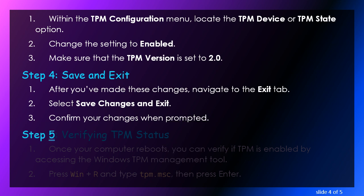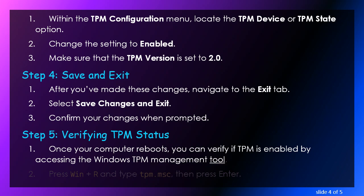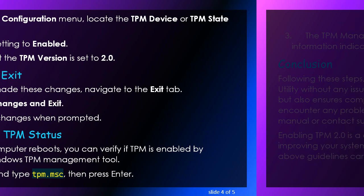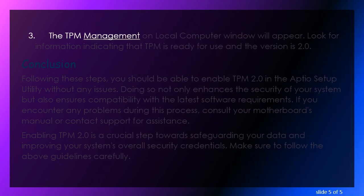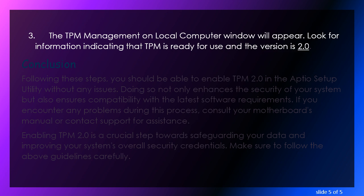Step 5: Verifying TPM Status. Once your computer reboots, you can verify if TPM is enabled by accessing the Windows TPM Management tool. Press Win + R and type tpm.msc, then press Enter. The TPM Management on Local Computer window will appear. Look for information indicating that TPM is ready for use and the version is 2.0.